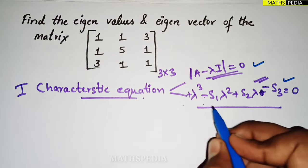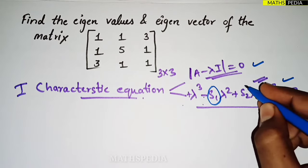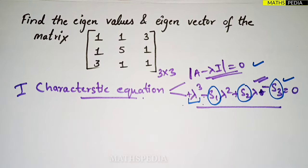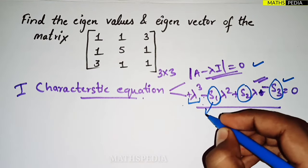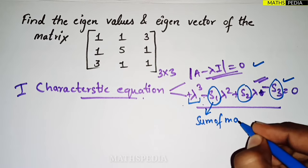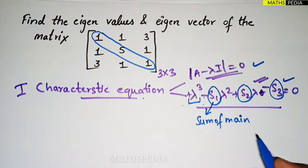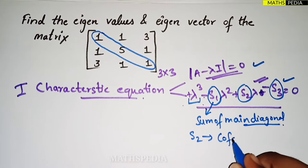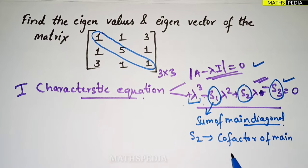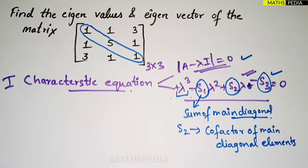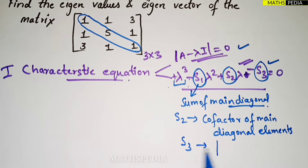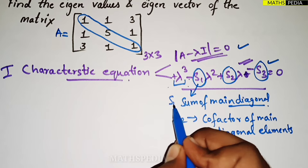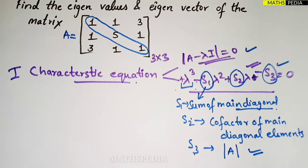In the formula λ³ − S1·λ² + S2·λ − S3 = 0, λ is the eigenvalue (the variable). S1 is the sum of the main diagonal elements. S2 is the sum of the cofactors of the main diagonal elements. S3 is the determinant of the matrix. We need to find all three values S1, S2, and S3.